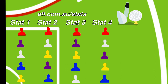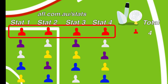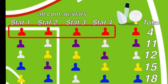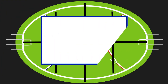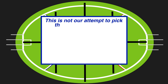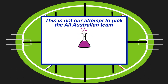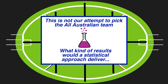For example, if a player ranked first in every category, they would receive 4 points. This means that players who ranked the most consistently in the chosen statistics would be selected in the team. It should be noted that this is not our attempt to pick the All-Australian team, but rather should be thought of as an experiment to see what kind of results a purely statistical approach would deliver. And so, after hours of gruelling stat collection, we had our team.